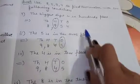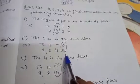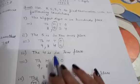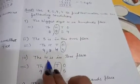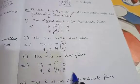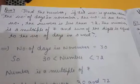Second condition: 5 is in the ones place. We must write 5 at the ones place; the rest of the digits can go in any order. One example is 9845; another could be 4985 — 5 remains at the ones place only. Third condition: 4 is in the tens place — restrict 4 at the tens place, rest can be interchanged. Fourth condition: 8 is in the thousands place — keep 8 there and interchange the remaining digits accordingly.